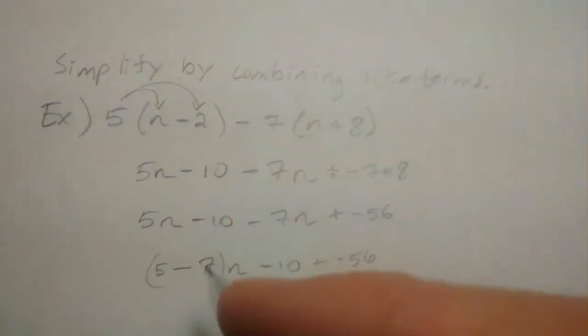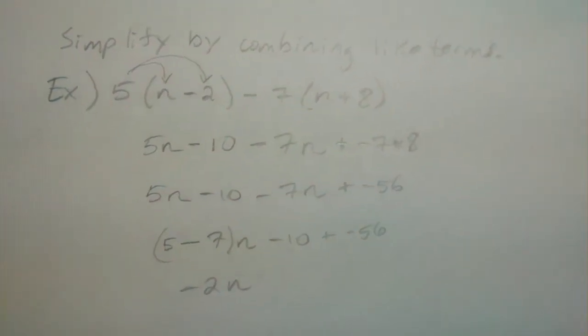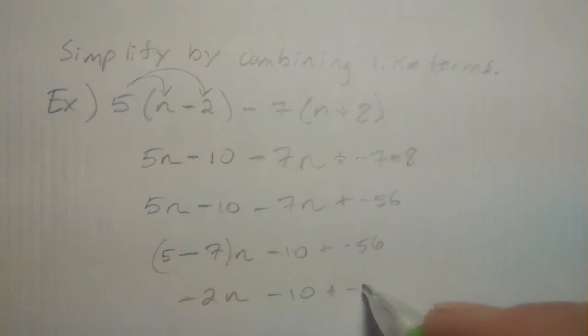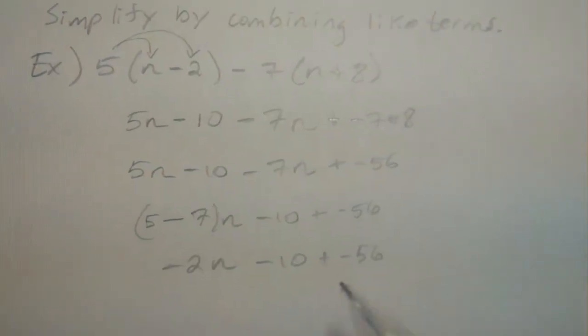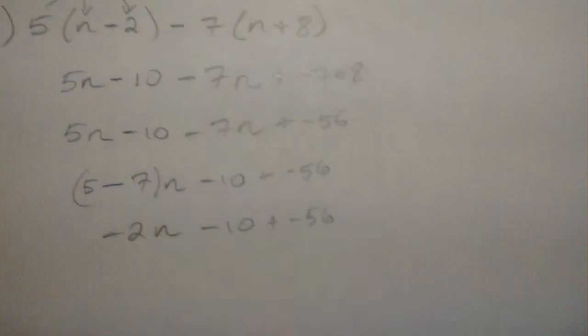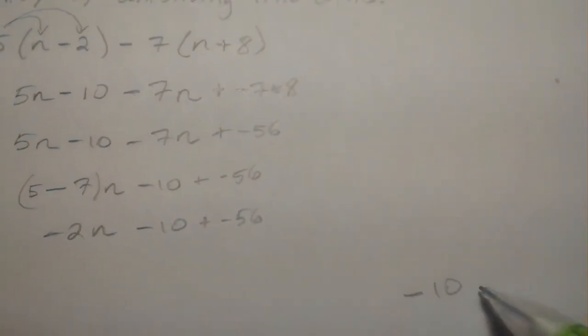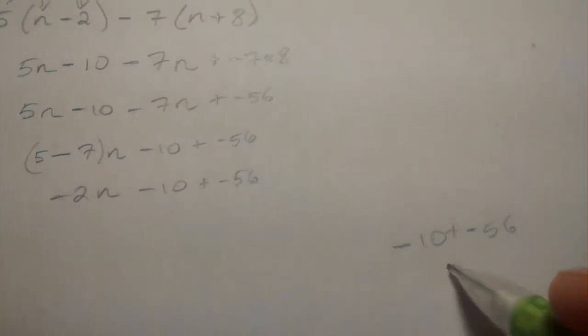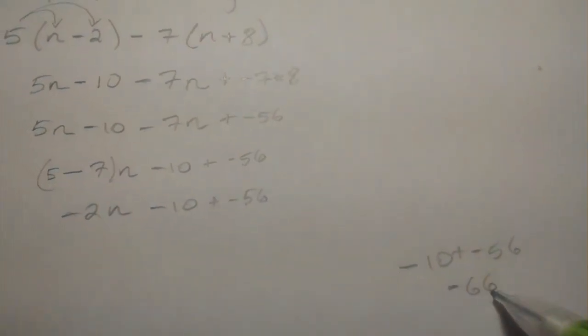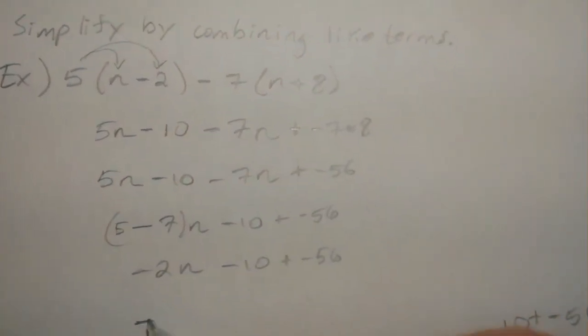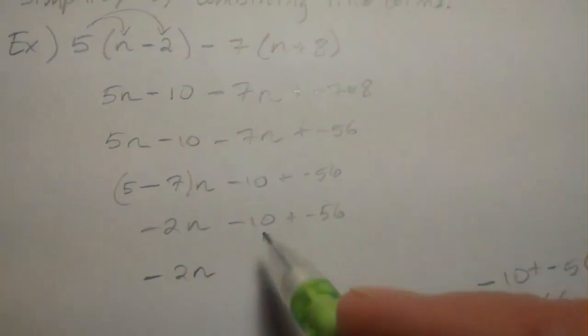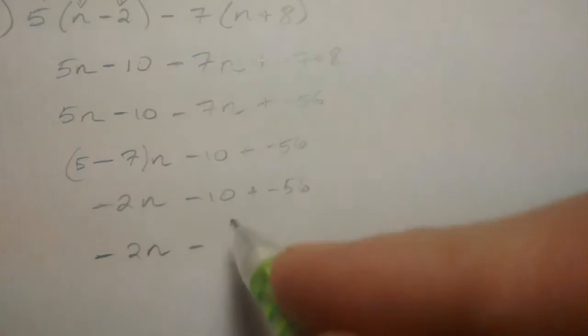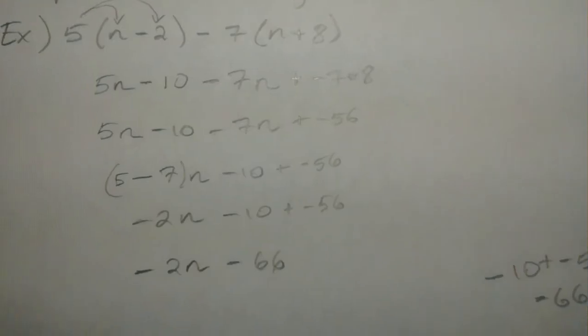All right, so this leaves me with negative 2n's, and minus 10 added to negative 56. So you may want to come off to the side and write what is a minus 10 or a negative 10 added to a negative 56. Hopefully you agree that it's a negative 66. So what we have here is negative 2n and minus 66.